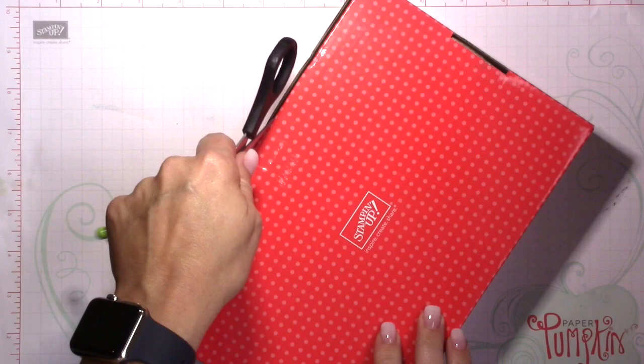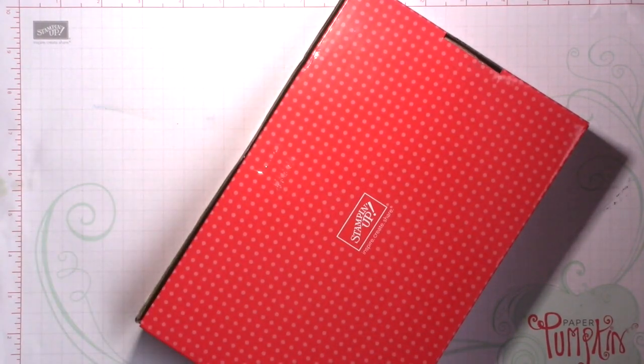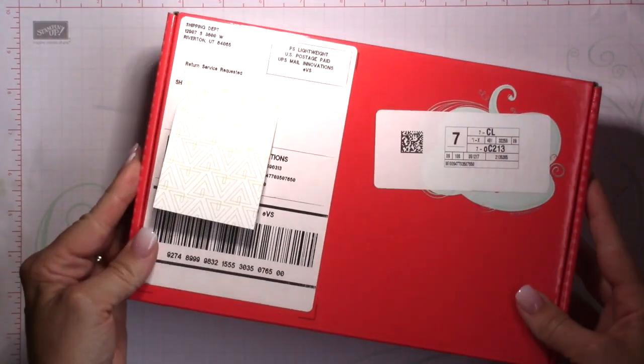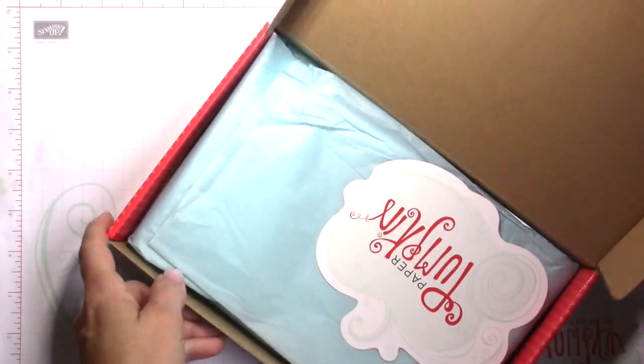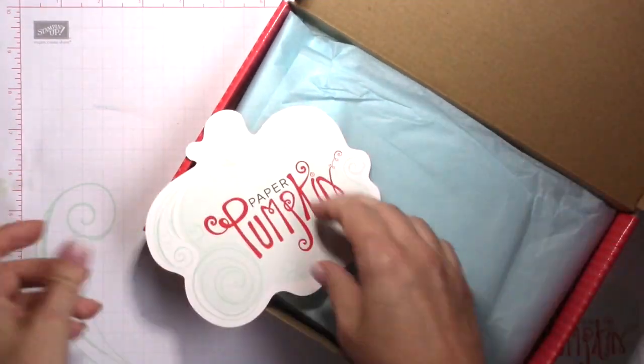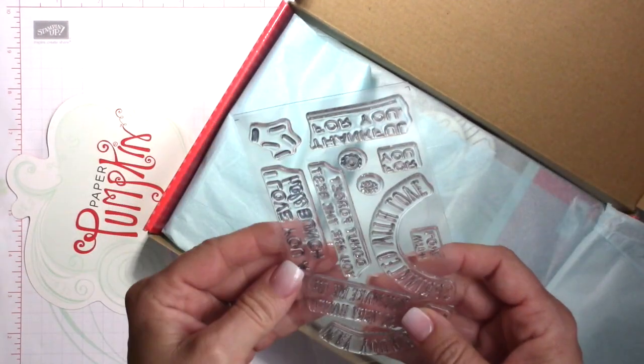So I was just pointing out to you that Stampin' Up! has started to label the Paper Pumpkin boxes with the month and the year and then the name of the kit. So that's a really nice feature.